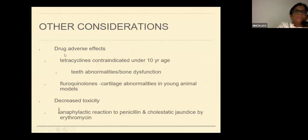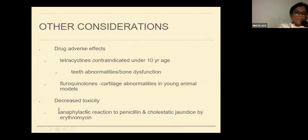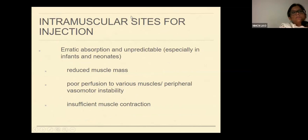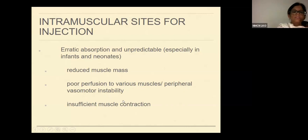Other considerations: look for specific drug adverse effects. Tetracyclines are contraindicated in children less than 10 years of age because of association with teeth abnormalities and bone problems. Fluoroquinolones are associated with cartilage abnormalities in young animal models. There can also be some decreased toxicity — like decreased anaphylactic reaction to penicillin and cholestatic jaundice with erythromycin — mainly because the immune system is not fully matured. Intramuscular absorption is erratic and unpredictable in very small infants and neonates, mainly because of reduced muscle mass, poor perfusion, peripheral vasomotor instability, and insufficient muscle contraction.